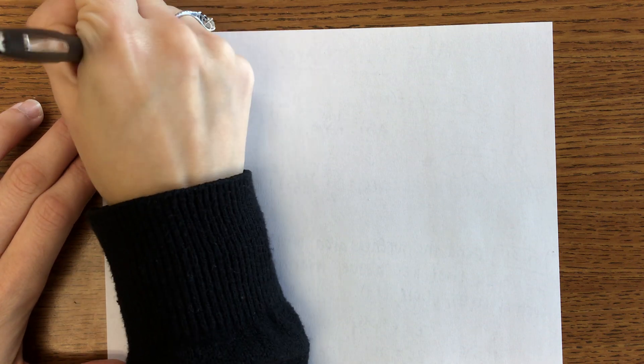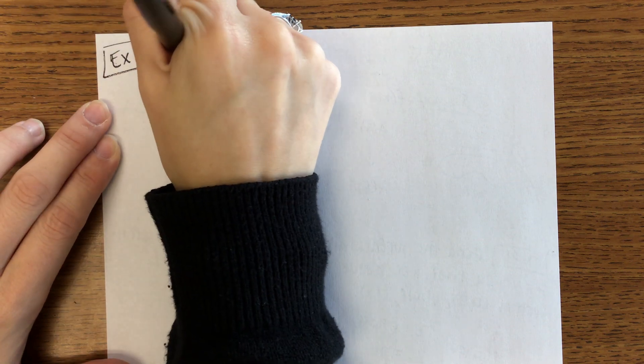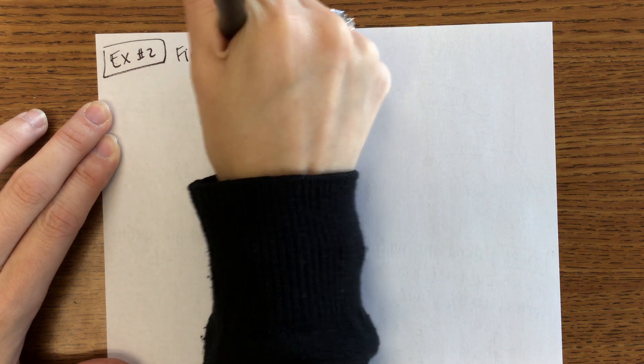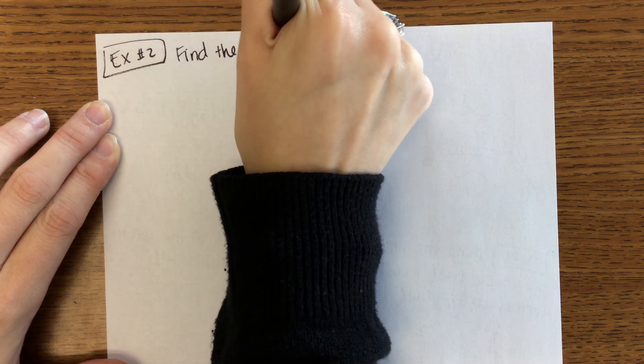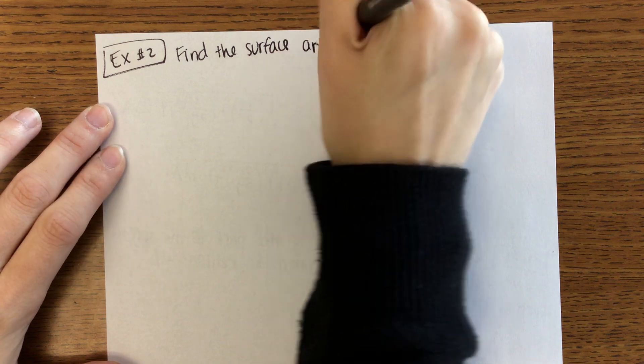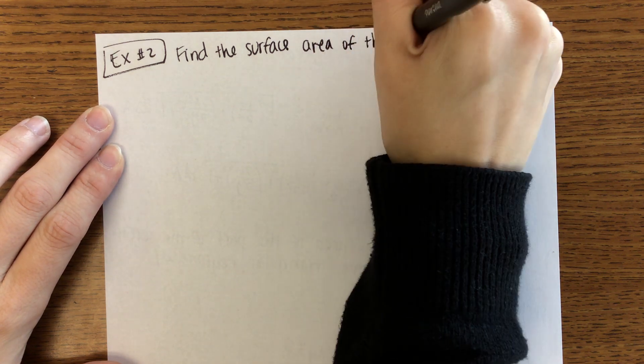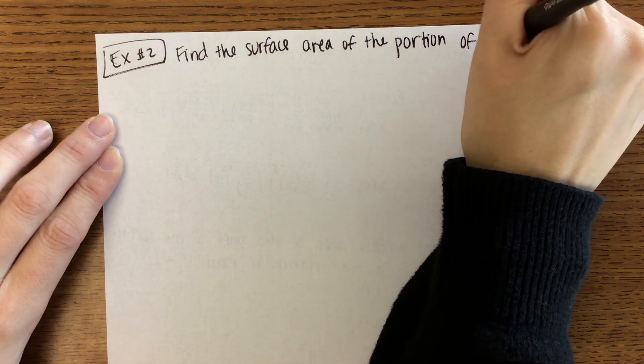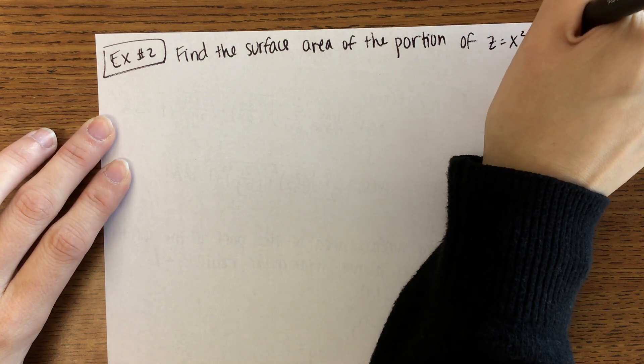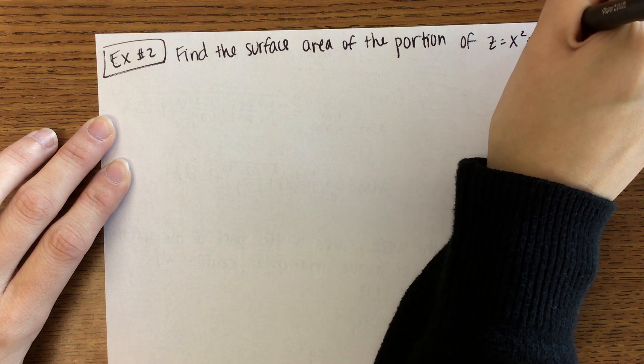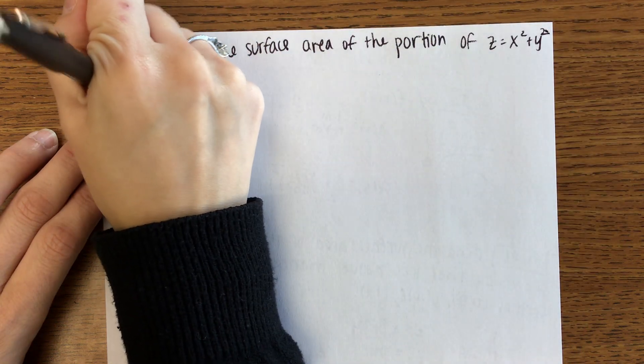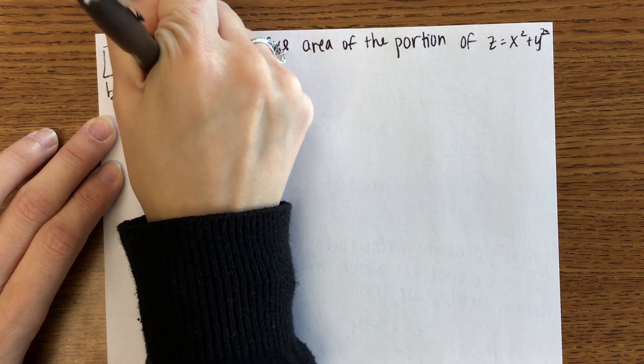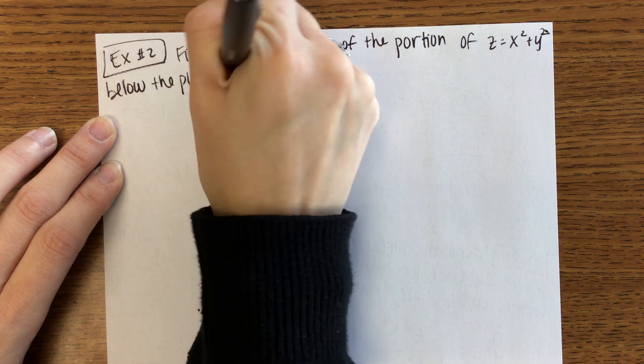Okay example two. We are going to find the surface area of the portion of Z equals X squared plus Y squared that is below the plane Z equals 9.